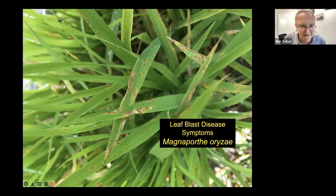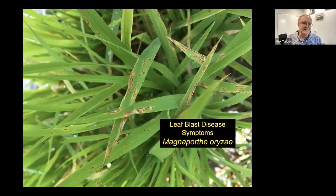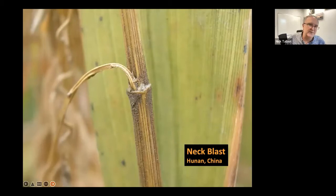Rice blast causes a leaf spot disease on young rice seedlings, but can also infect all above-ground parts of a plant. On seedlings you see necrotic flecks on the surface. Rice blast is a tremendously important disease — it destroys enough rice each year to feed 60 million people. It's endemic in all rice-growing regions of the world, causing tremendous damage particularly on seedlings in rain-fed lowland ecosystems.